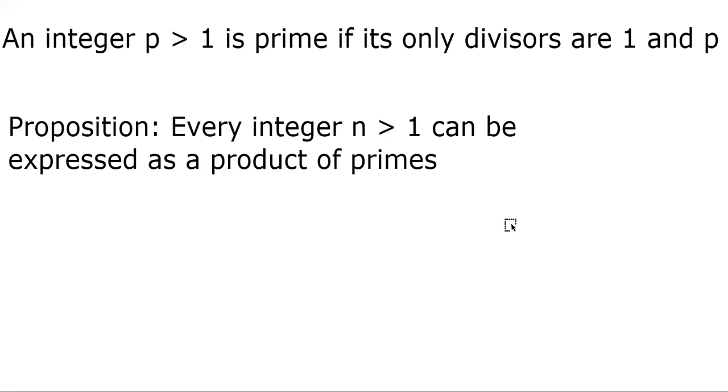2 is the only even number because if you plug p to be 2, 2 is greater than 1 and the divisors are 1 divides 2 and 2 also divides 2. So 2 is the only even prime number.